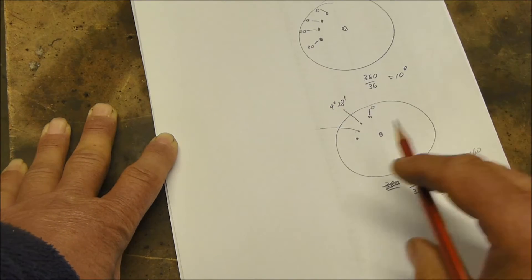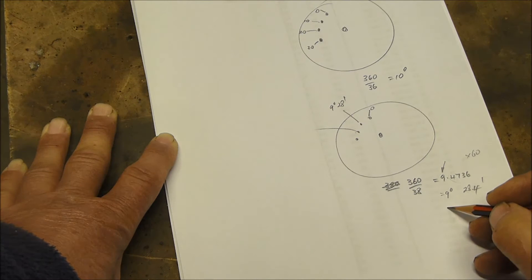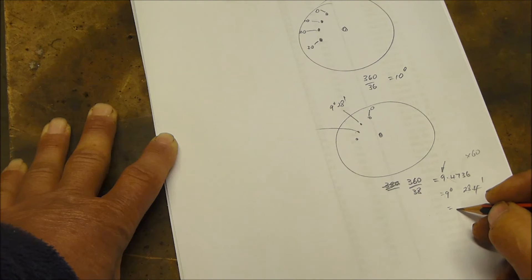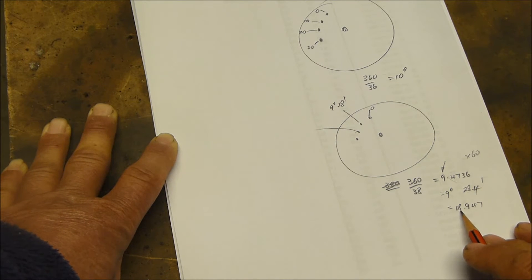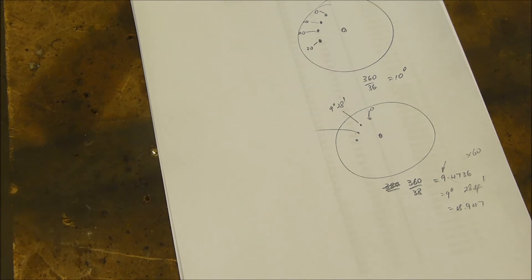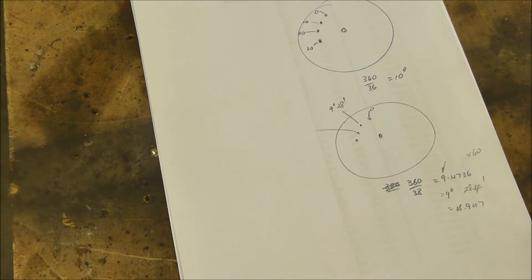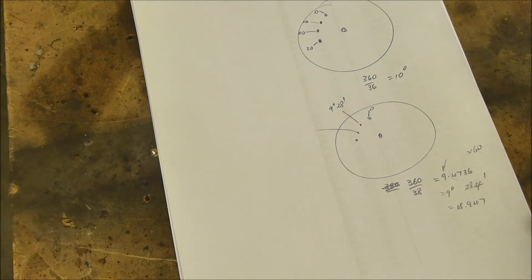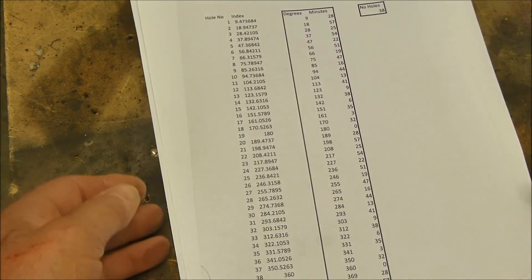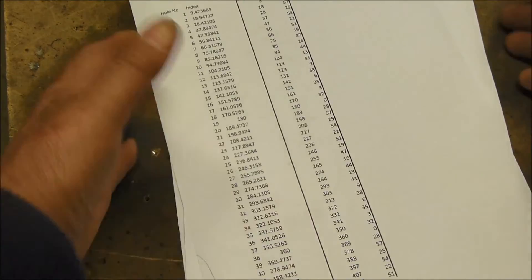and so we would drill the next hole at 9 degrees and 28 minutes. We then have to work out the next one, and the next one is in fact 18.947 from memory. So we would drill the next one at 18 degrees and then we're going to multiply the 0.94 by 60 to get our minutes. Clearly we can't do that on the fly and so I've just done a quick spreadsheet to give us those answers nice and easily, and this is the spreadsheet.